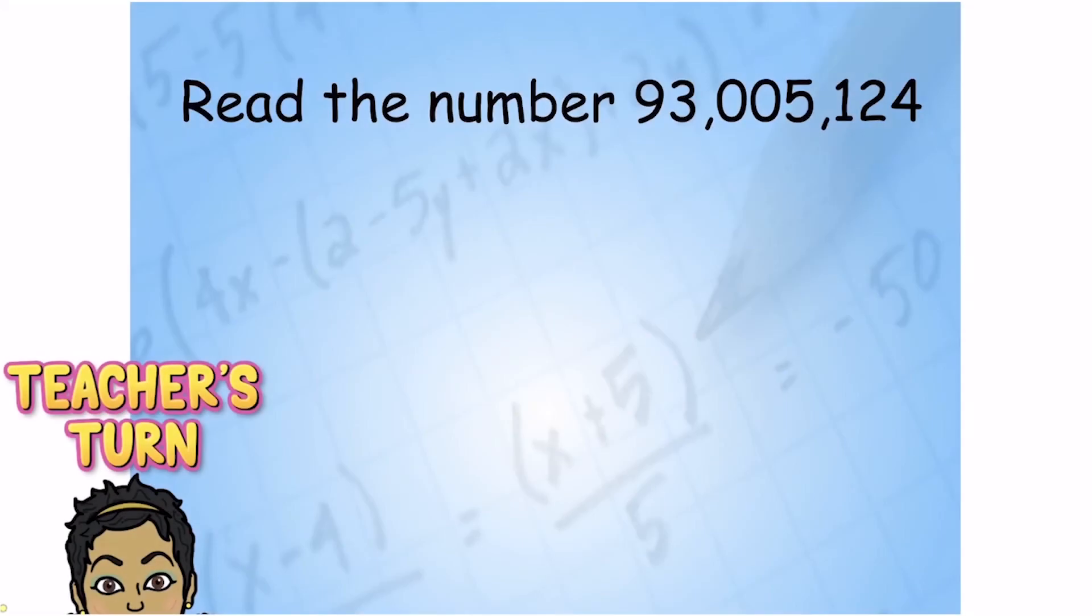Again, I'm starting from the right. I have my ones, my thousands, and my millions. That's all I have to write. And I'm going to start reading it from left to right. Remember, first name, last name, slight pause when I see this comma.